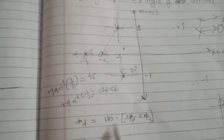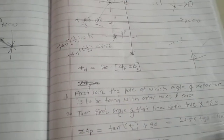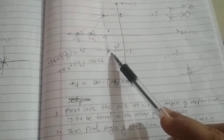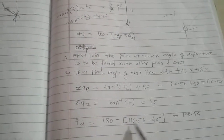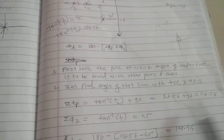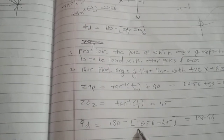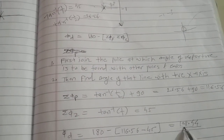After that, use the formula: angle of departure φd equals 180° minus summation of φp minus summation of φz. Summation φp — excluding this pole there are two remaining poles, so the angles are 26.56° and 90°, giving summation φp = 116.56°. Summation φz is 45°. So φd equals 180° minus 116.56° minus 45°, giving angle of departure = 108.44°.